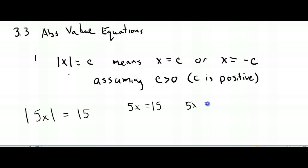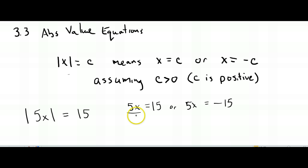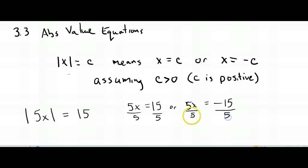Or 5x equals negative 15. And then we solve these two equations the same way — divide by 5 on both sides — and we get x equals 3, or x equals negative 3.